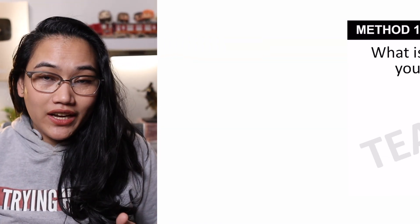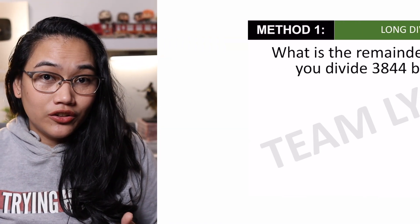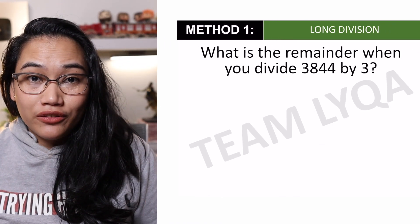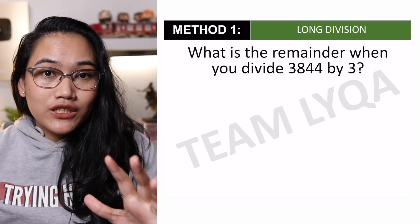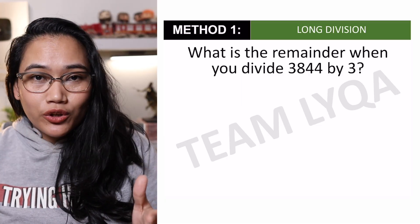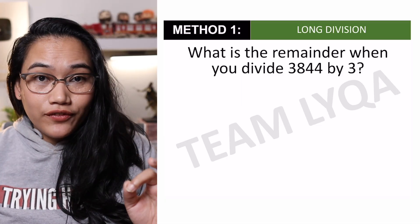Alright, now let's just dive right into your lesson for today. The question goes: What is the remainder when you divide 3,844 by 3? The first method is straightforward — long division.